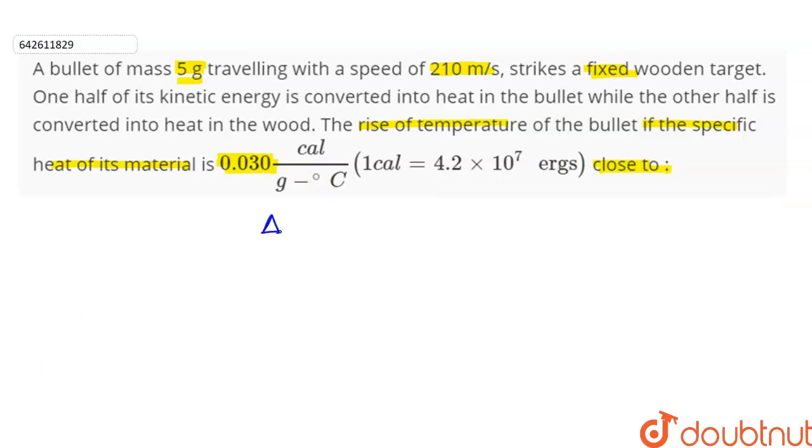So we need to find delta T bullet. We are given mass of bullet small m is equal to 5 grams or 5 upon 1000 kilograms.